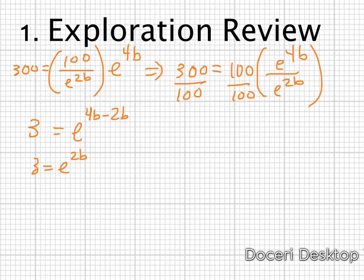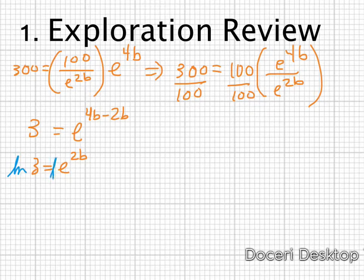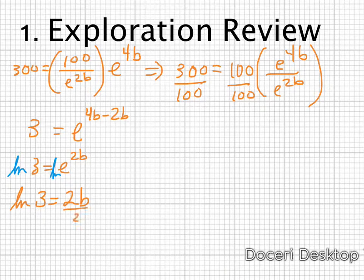Since I want to get rid of the e and bring b out of the exponent, I rewrite using logs. Because we're talking about e, I use the natural log. Taking the natural log of both sides leaves me with the natural log of 3 equal to 2b. Solving for b by dividing both sides by 2: b equals the natural log of 3 divided by 2.